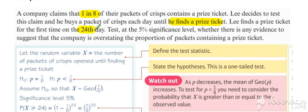Here's your evidence: he finds a prize ticket for the first time on the 24th day. Test at the 5% significance level.